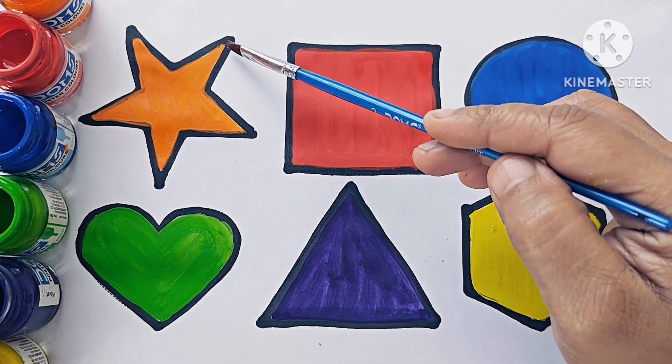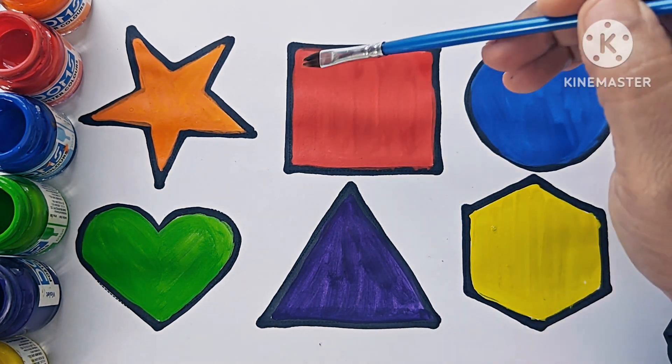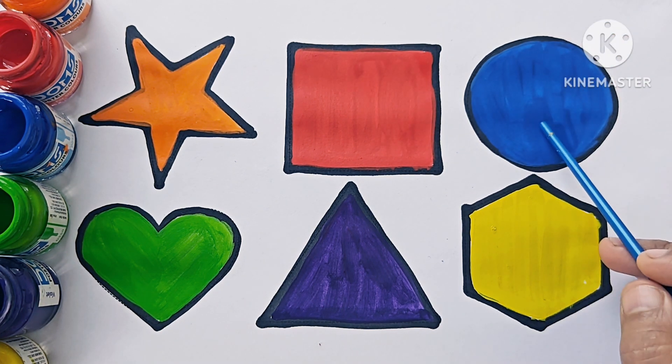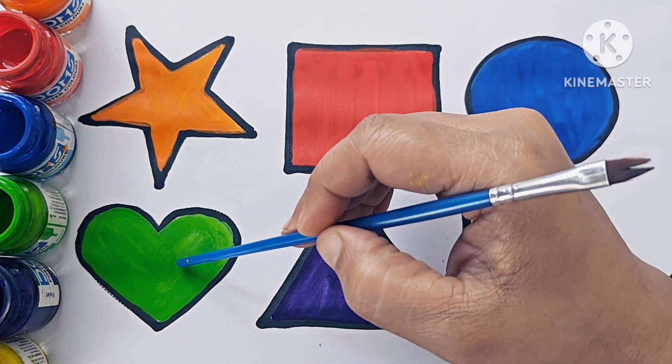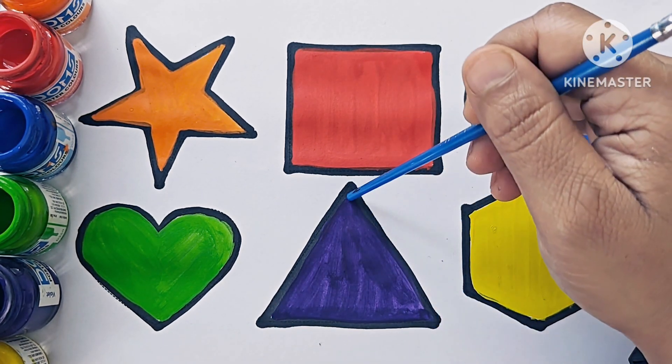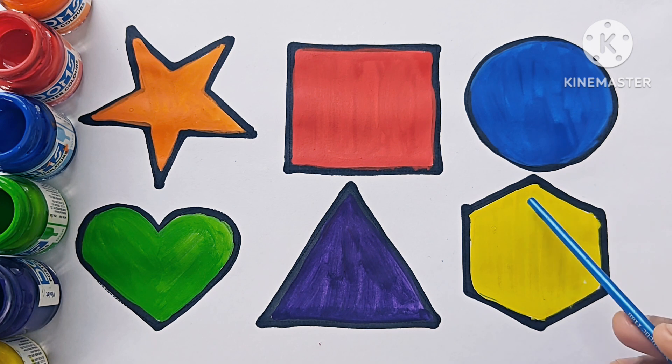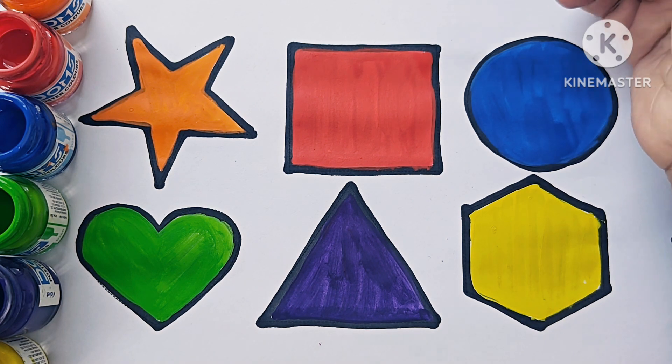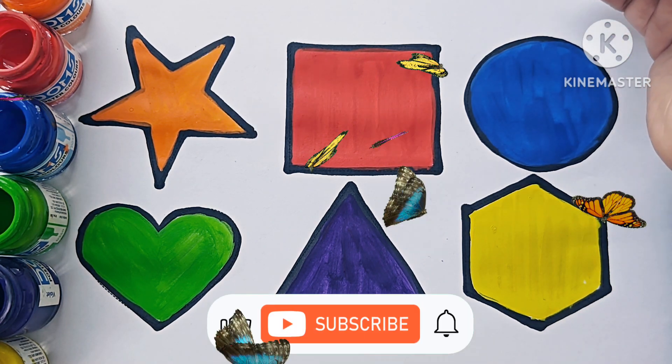This is square. It has four sides: one, two, three, four. This is circle. Circle has no side. This is a heart. Heart is a shape. Triangle, it has three sides: one, two, three. Three sides. Hexagon, it has six sides: one, two, three, four, five, six.